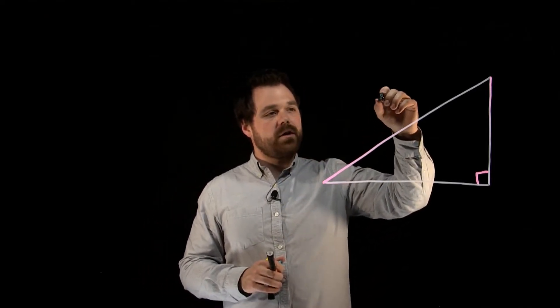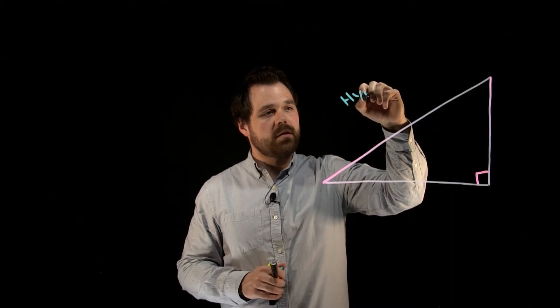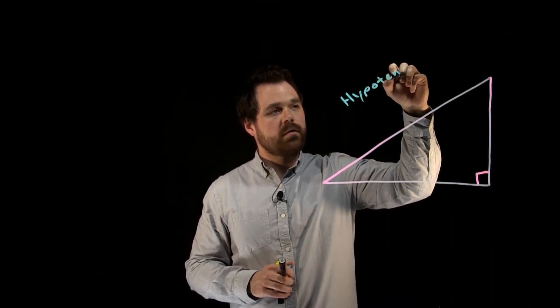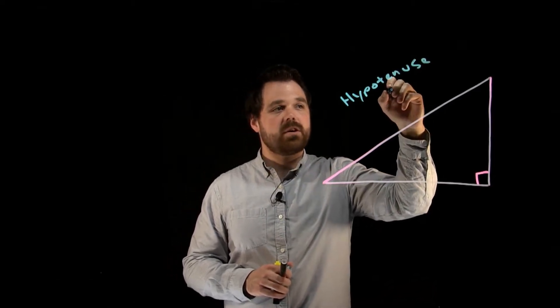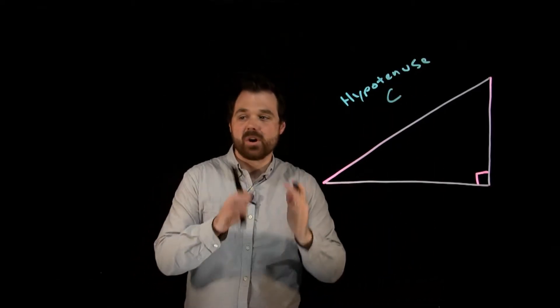What really matters is that we're going to call the hypotenuse up here - the hypotenuse being the side directly across from the 90-degree angle - we're going to call that C. And it's always going to be C.